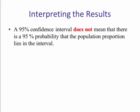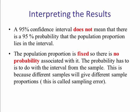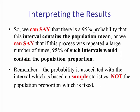A 95% confidence interval does not mean that there is a 95% probability that the population proportion lies in the interval. The population proportion is fixed, so there is no probability associated with it. The probability has to do with the interval from the sample. This is because different samples will give different sample proportions, and this is known as sampling error. So we can say that there is a 95% probability that this interval contains the population mean, or we can say that if this process was repeated a large number of times, 95% of such intervals would contain the population proportion.